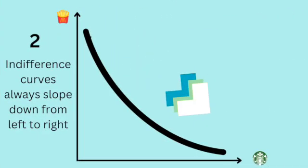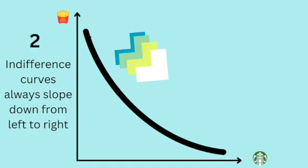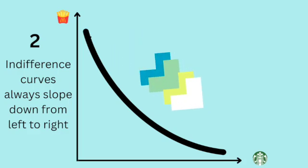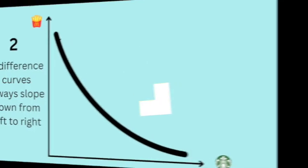Secondly, the curve always slopes down from left to right. This is because we always assume that more of something is better than less. So if you're asking people to give something up, then they need to be compensated with more of something else to keep their utility constant. Or in our example, if they're being asked to sacrifice visits to McDonald's, they will need more visits to Starbucks.